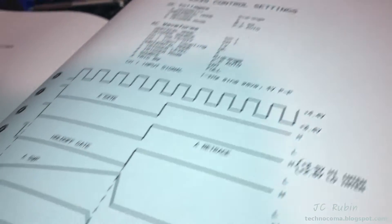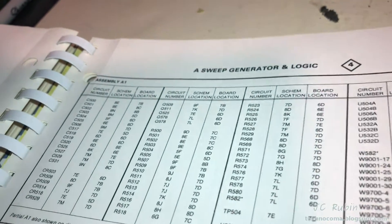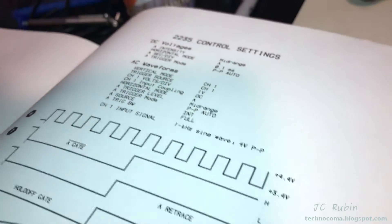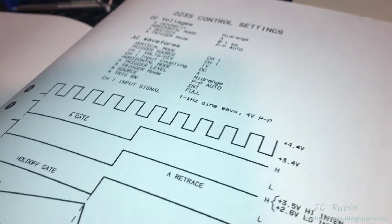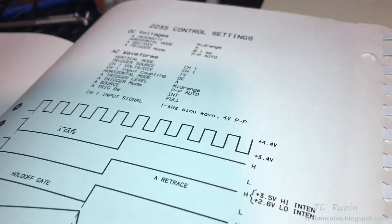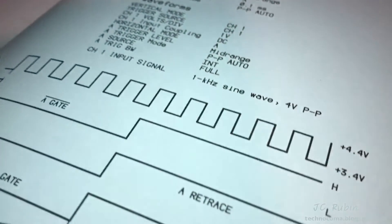I'm going to be going through each and every one of these test points here for the A-sweep generator and logic board number four. Most of them I will say are not on board four, they're on the main board. I have the positions for all of these.